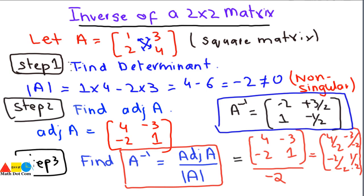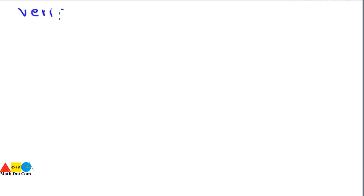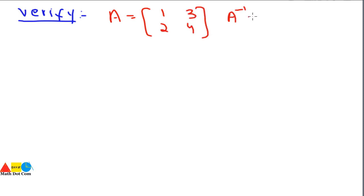You can also check whether the answer you got is correct or not. Let's verify the result. If you multiply the inverse with the original matrix A, you should get the identity matrix. The original matrix A is [1, 2; 3, 4] and the A inverse we obtained is [minus 2, 1; 3/2, minus 1/2]. Let's multiply these together to verify.